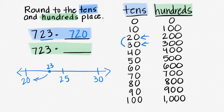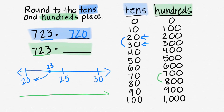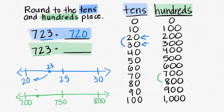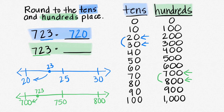Now we have to round to the hundreds place, so we're going to start from the hundreds and on. We have 723 — that falls somewhere between 700 and 800. Let's write 700, 800; halfway would be 750. We know that 723 is before 750. Is 723 closer to 700 or closer to 800? We notice it's closer to 700, so 723 rounds to 700.